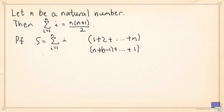More formally, this can be written as the sum as i goes from 1 up to n of n minus i plus 1. So when i is 1, this term is just n, and when i is n, this term is just 1.